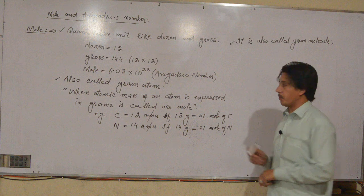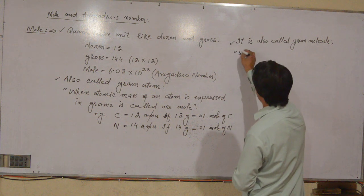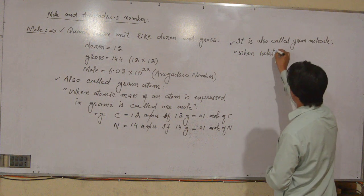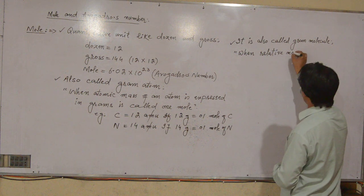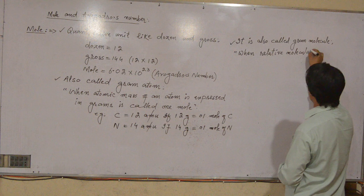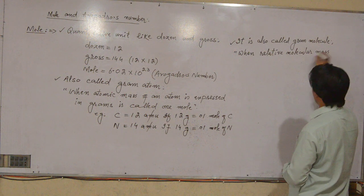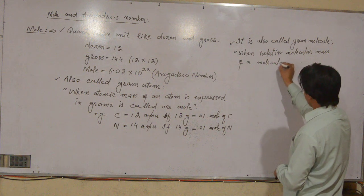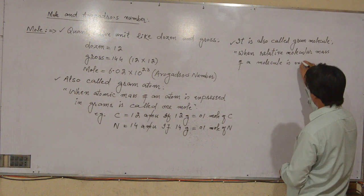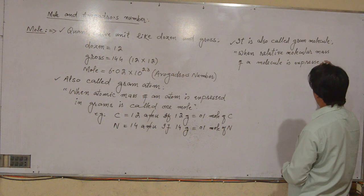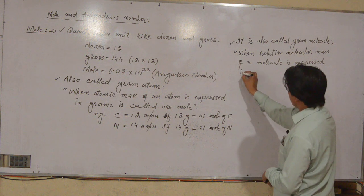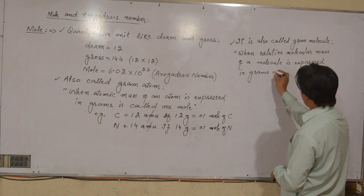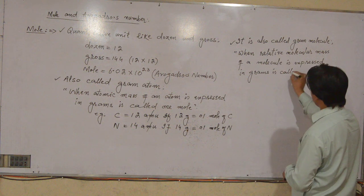When the relative molecular mass of a molecule is expressed in grams, it is called one mole of that molecule.